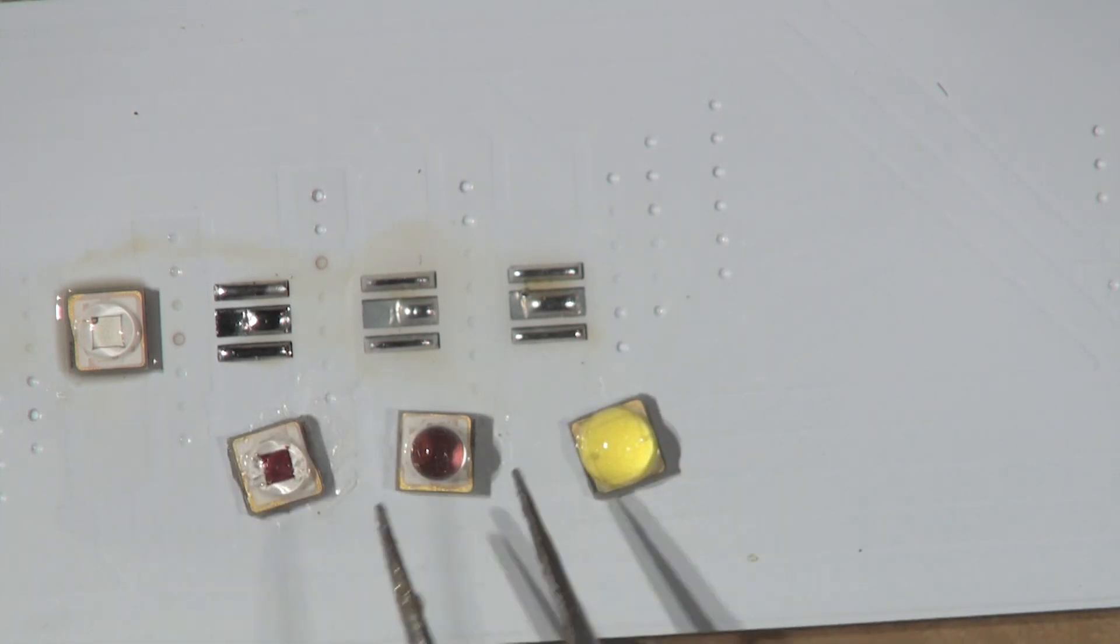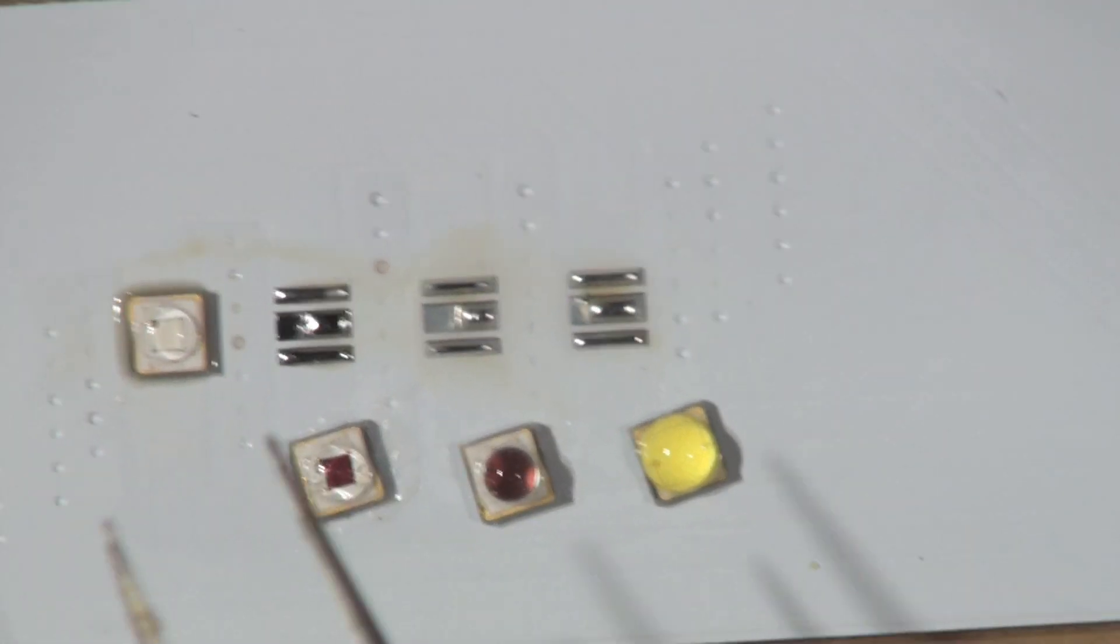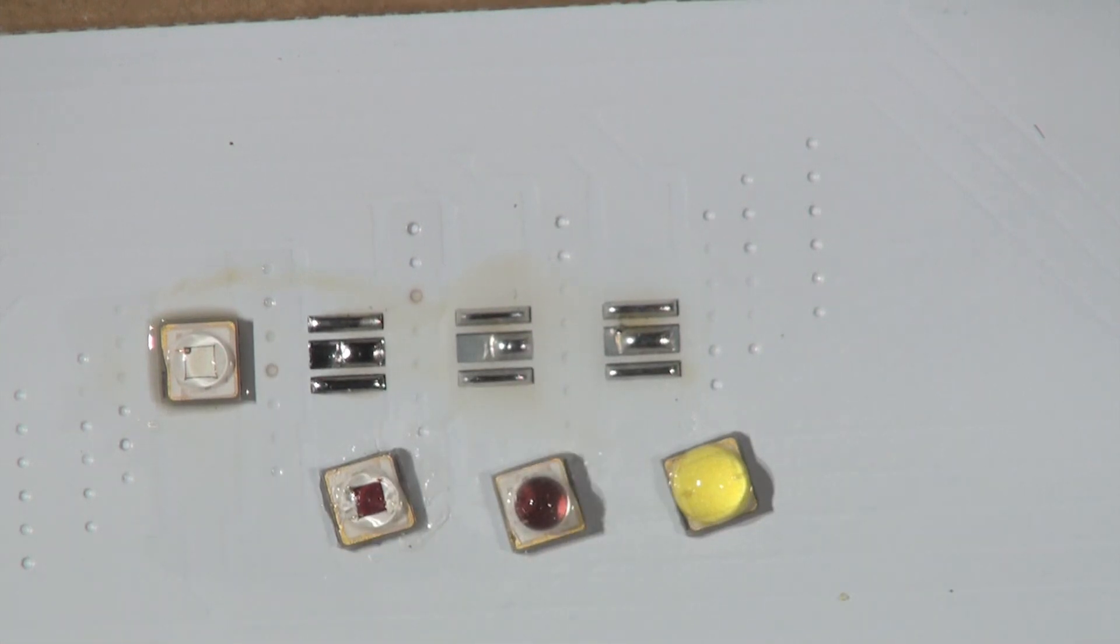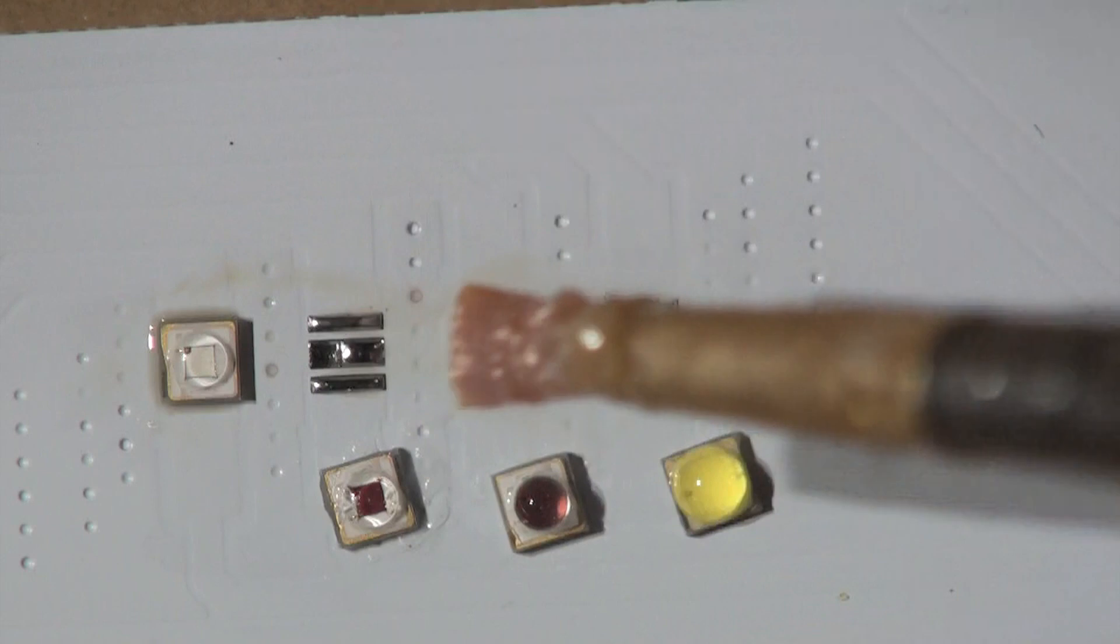This is a high thermal conductivity board. What I've done is I've wetted the pads with a tiny bit of solder. You can't use too much, but it doesn't really matter so much. This is about the third big strip I've done.